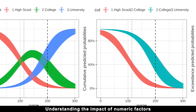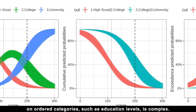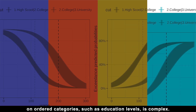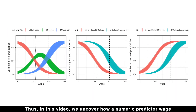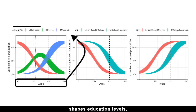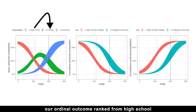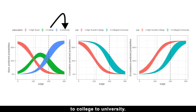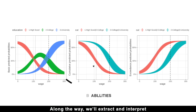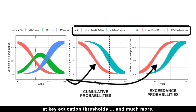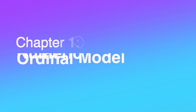Understanding the impact of numeric factors on ordered categories such as education levels is complex. In this video, we uncover how a numeric predictor, wage, shapes education levels — our ordinal outcome ranked from high school to college to university. Along the way, we'll extract and interpret the cumulative and exceedance probabilities at key education thresholds and much more.